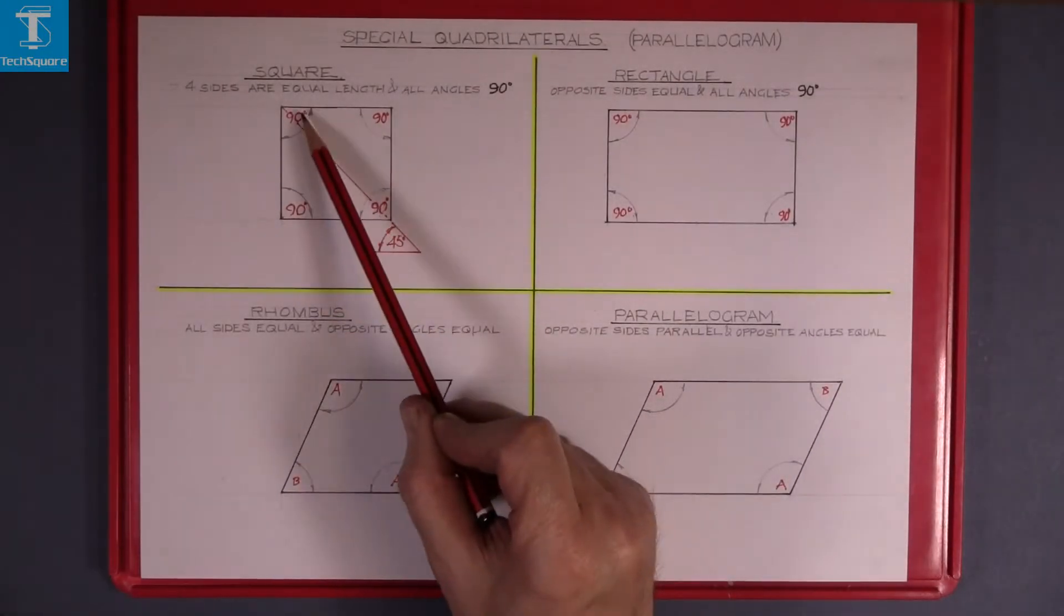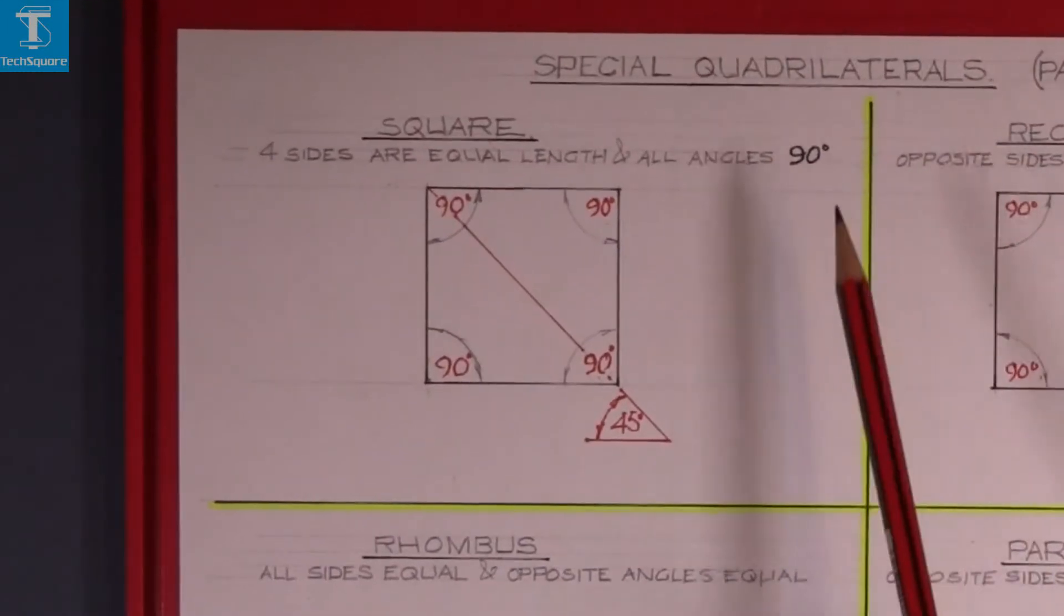And now we're on to four sided figures and they're called quadrilaterals.